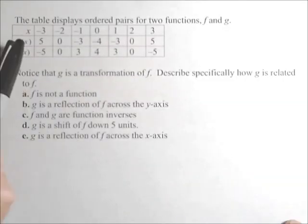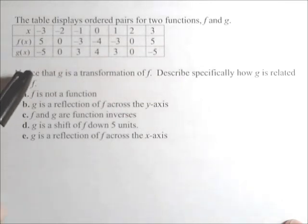In this video, we're given a table that has a couple functions, f and g, and we're supposed to identify what kind of transformation g is of f. So what are we doing to f in order to get g?